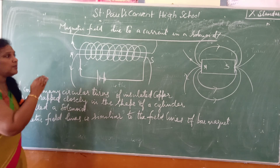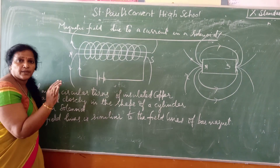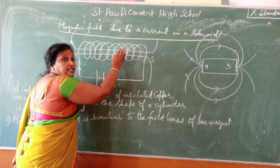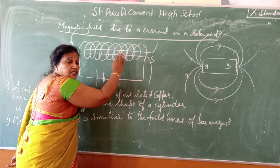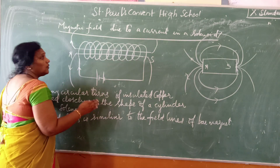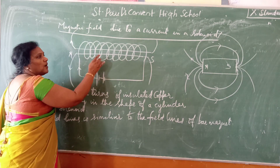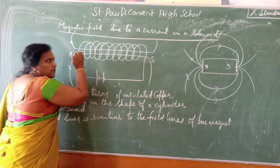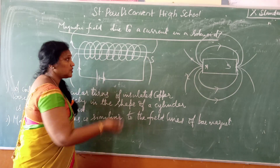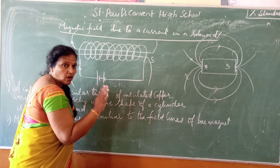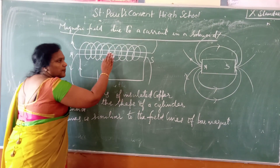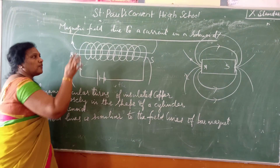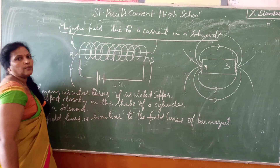Why will it be in the form of straight lines? Because the magnetic field will be the same at all points inside the solenoid. Therefore it is uniform inside the solenoid. Hence the magnetic field is uniform inside the solenoid.